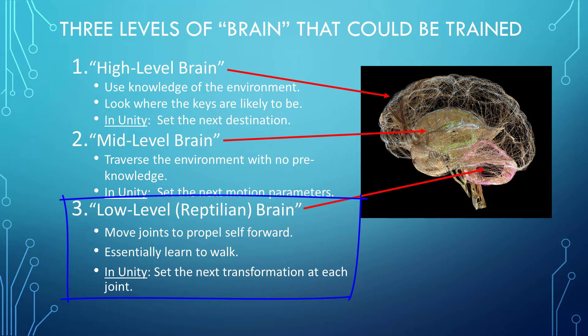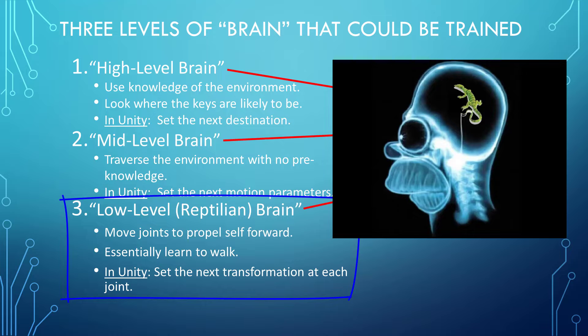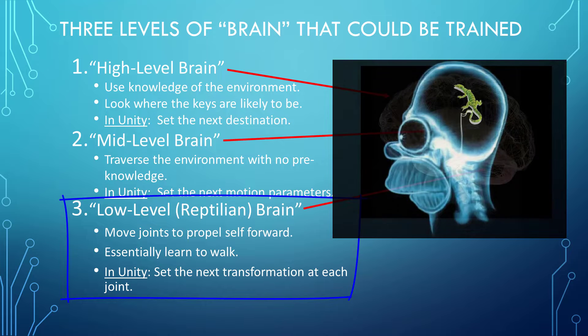In the low-level brain approach, we train the humanoid to move its knees, hips, ankles, and other body joints to achieve forward motion. Essentially, we are teaching the humanoid to walk so that the environment can be searched. This is below the level of conscious thought and can be called the reptilian brain.